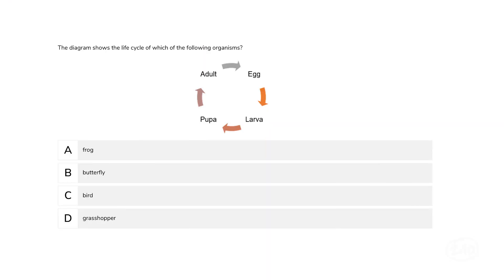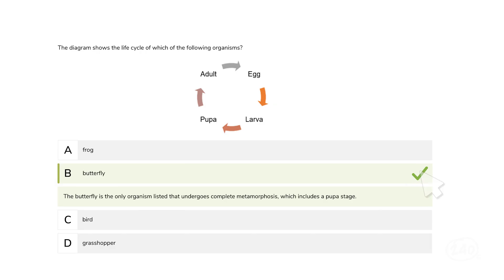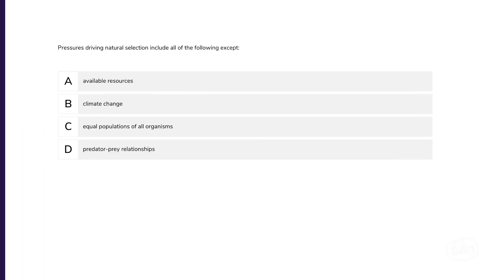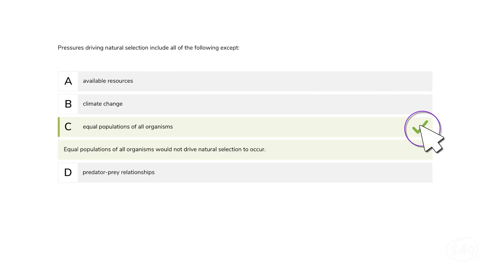Let's move on to life science — specifically metamorphosis. The diagram shows the life cycle of which of the following organisms? The butterfly is the only organism listed that undergoes complete metamorphosis, which includes a pupa stage. And how about natural selection questions? Pressures driving natural selection include all of the following except... Climate change, available resources, and predator-prey relationships all do drive natural selection, but equal populations of all organisms would not drive natural selection to occur — so that is the best choice.